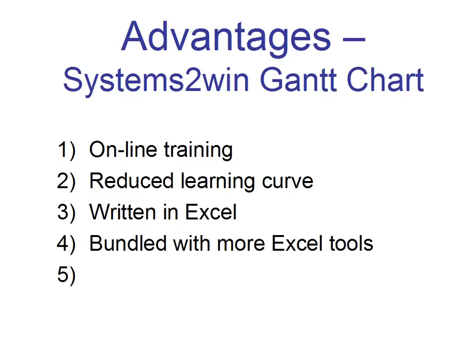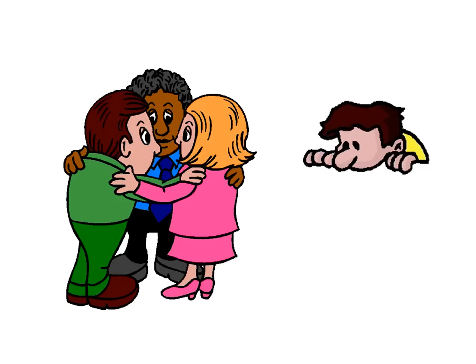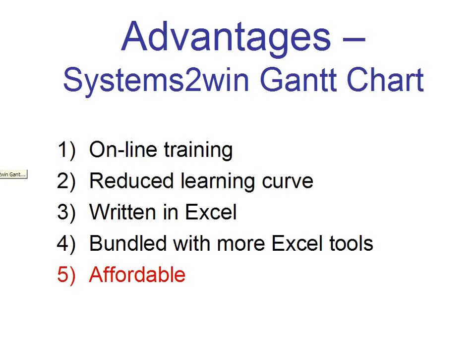There are a lot of advantages of the Systems2Win Gantt chart, not the least of which is the training video you're watching right now. Combined with the fact that it's written in Excel, this results in a radically reduced learning curve that gets leveraged across all the other Excel tools bundled with your Gantt chart. Once your people learn one, they've learned to use them all. And the Systems2Win Gantt chart overcomes the number one complaint of users of Microsoft Project and other expensive software — it's inexpensive enough that management could spring for a copy for everyone on your project team.